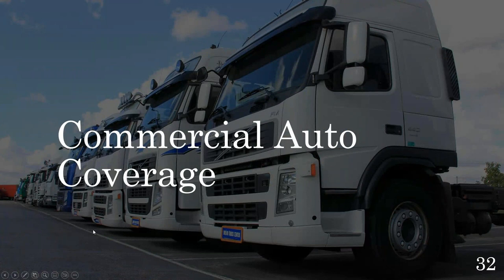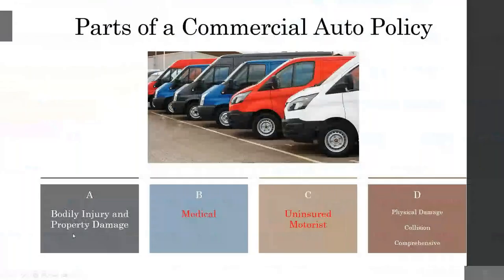Commercial auto coverage applies when you're in the automobile-related business or using commercial vehicles in the course of business. Like personal auto, you have liability (bodily injury and property damage), medical, uninsured motorists, and physical damage coverage. Medical and uninsured motorists are shown in red because they are optional in commercial auto. Company vehicles are typically only driven during work, and employees are covered under workers' compensation while on the job — so medical and UM are not necessary, which is why they're optional.